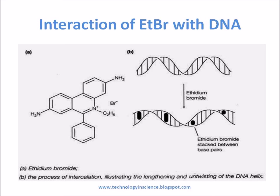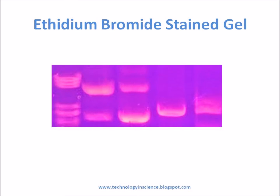The absorption maxima of ethidium bromide is in the UV range; upon excitation, ethidium bromide emits orange light with a wavelength of 605 nm. Small amounts of DNA, approximately 10 ng, can be detected using ethidium bromide staining. Ethidium bromide stock solutions are prepared at a concentration of 0.25 to 1.0 mcg per milliliter for gel staining.